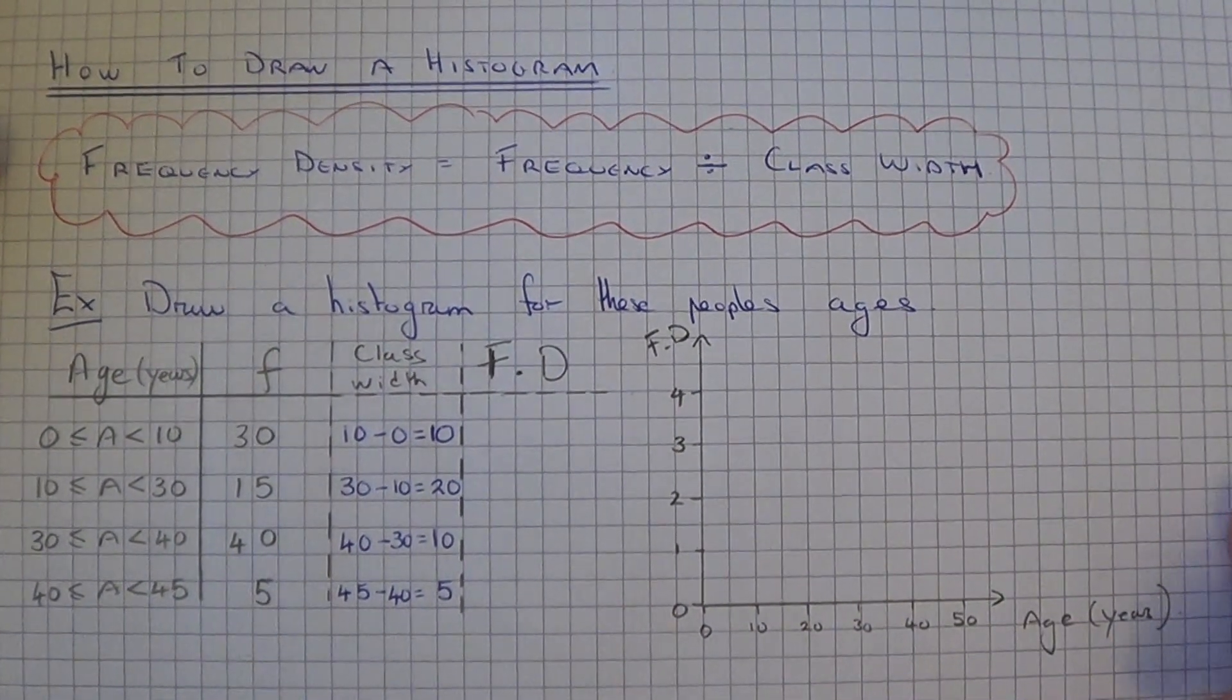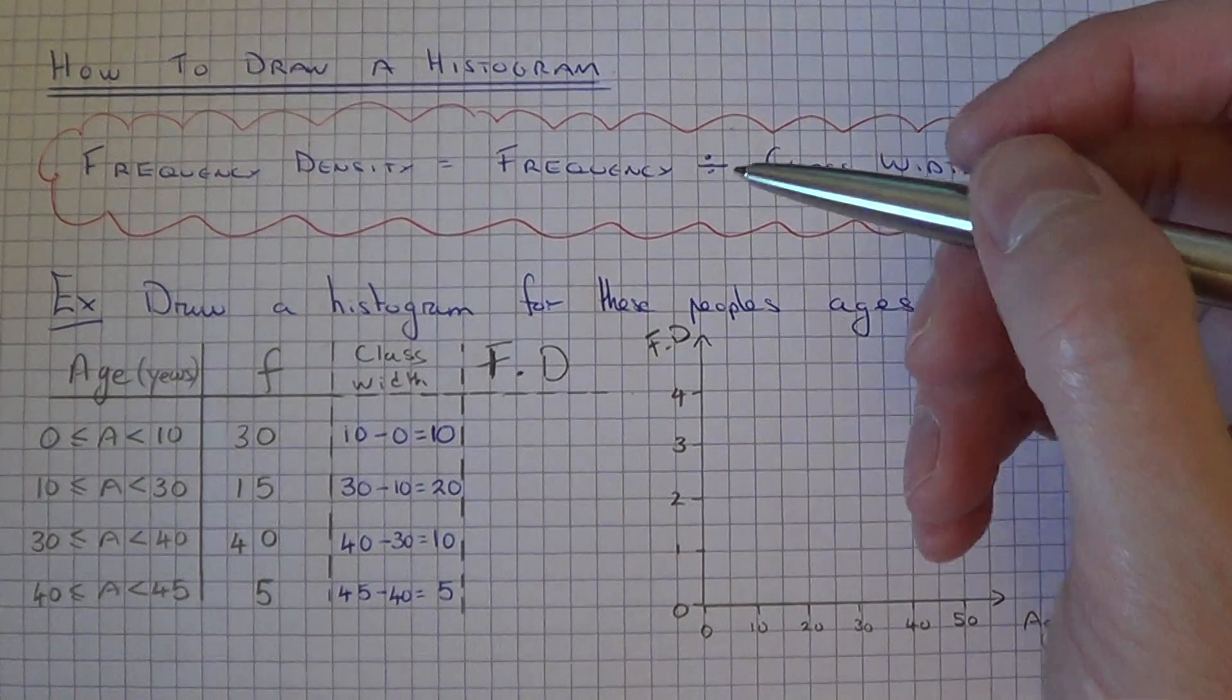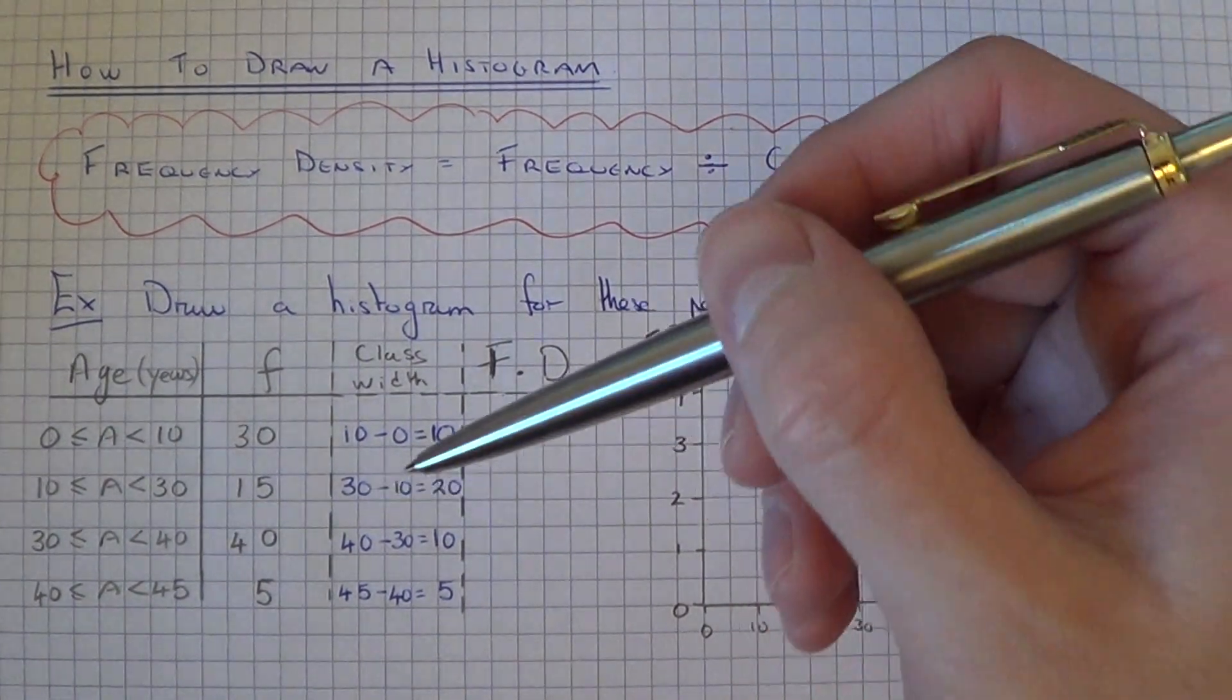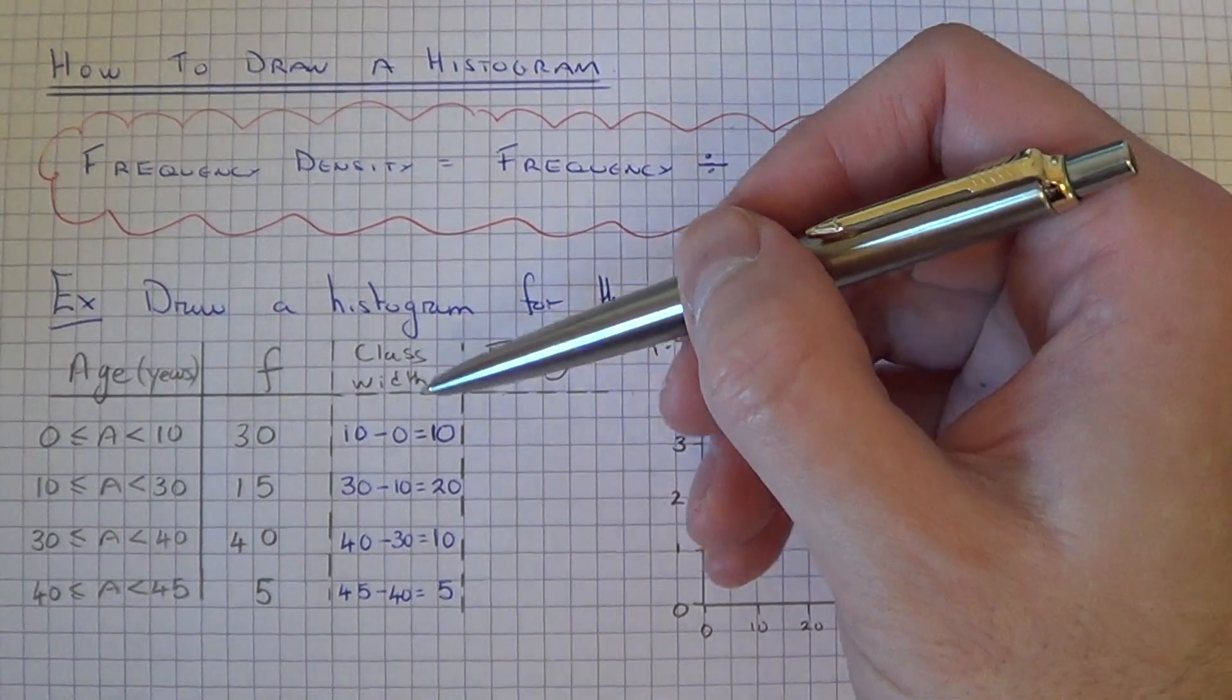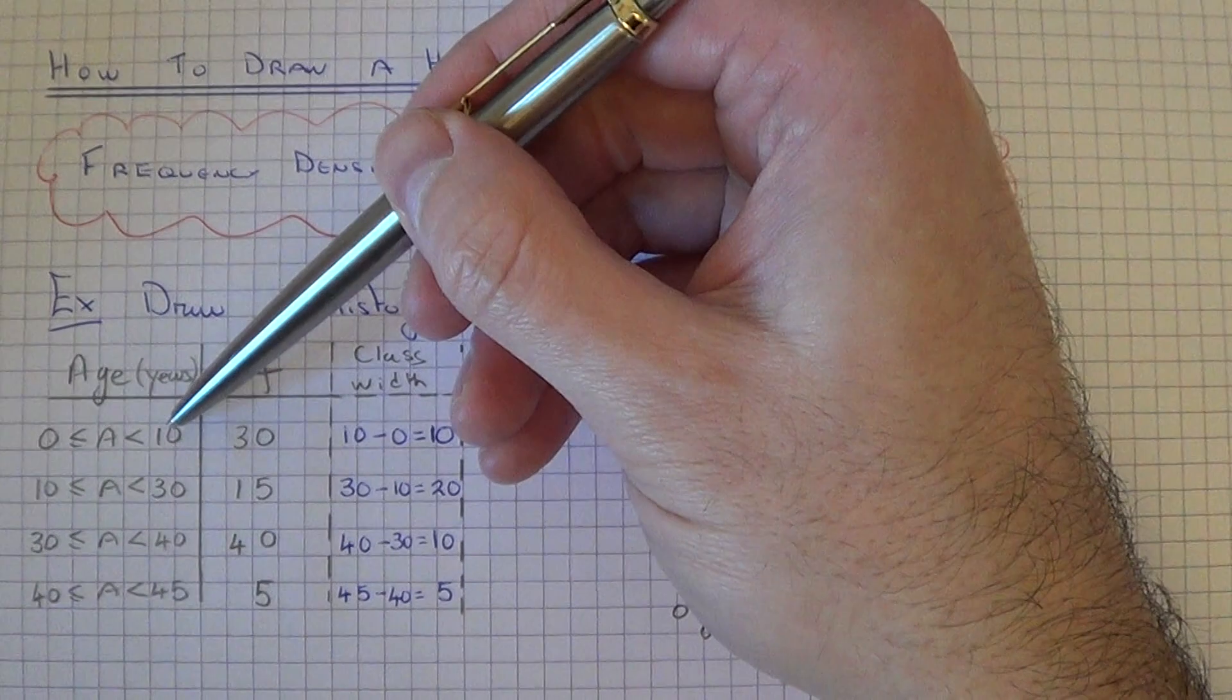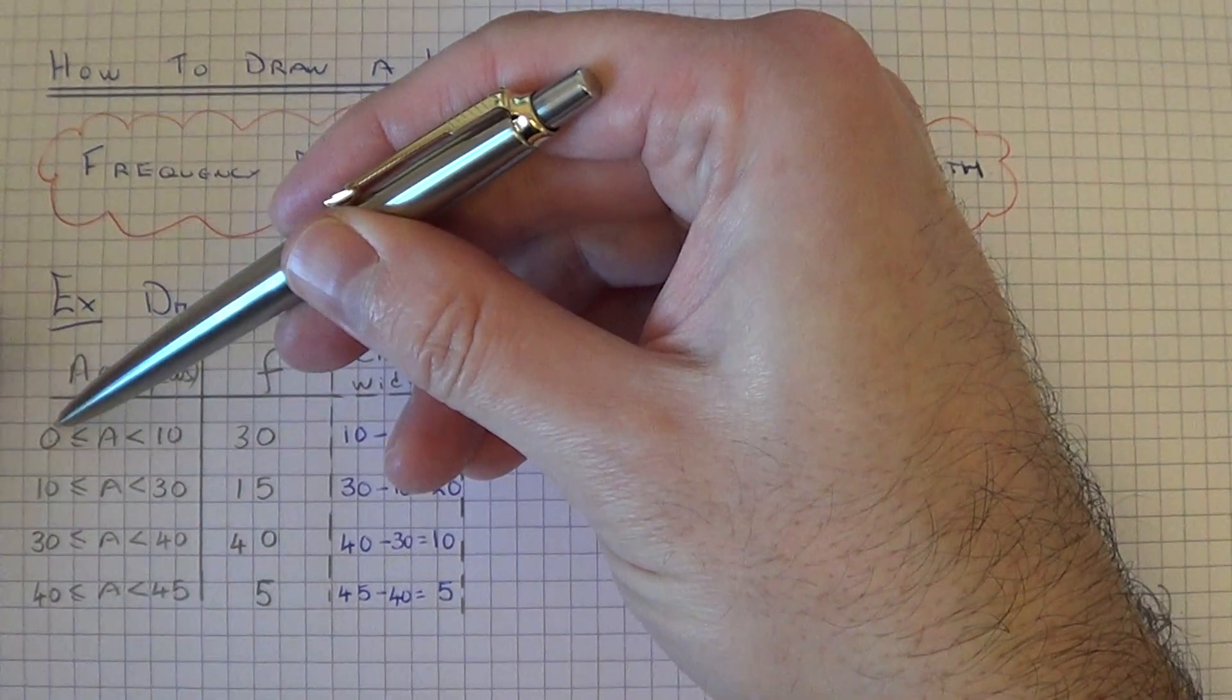So we've got to draw a histogram then for these people's ages in this frequency table. So I've already worked out the class width for each group. The class width is the difference between the upper limit and the lower limit of each group.